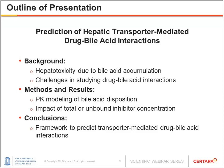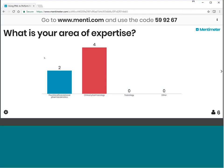Before we get started, I'd like to get to know more about your background. Please go to menti.com and we'll start a poll question. The first question is: what is your area of expertise? Preclinical translational pharmacokinetics, clinical pharmacology, toxicology, or others? You can start using the code and typing in your answer.